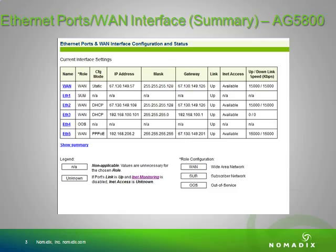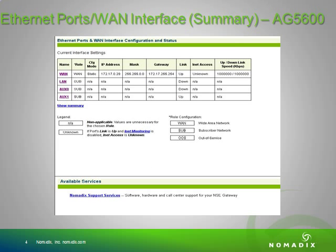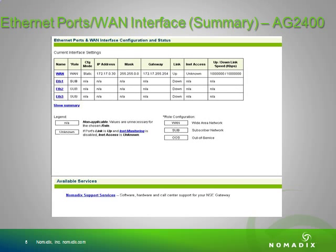As you can see in this example of an AG5800, there are six ethernet ports and all six can be separately configured as either WAN ports, out of service ports, or subscriber ports. On the AG5600, there are only four ports that can be configured. On the AG24, there are only four ports as well. So the maximum ports you can get is on the AG5800 with six ports.